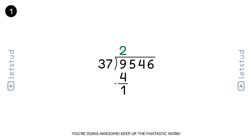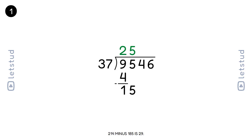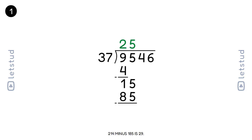You're doing awesome, keep up the fantastic work. Now let's bring down the next digit, 4, making it 214. 37 fits into 214 five times. 37 times 5 is 185. 214 minus 185 is 29.